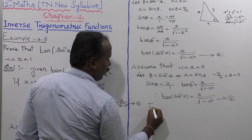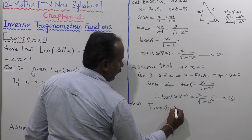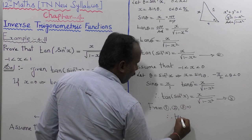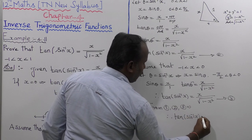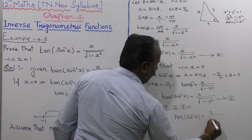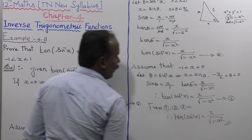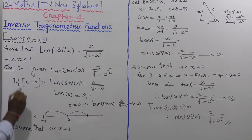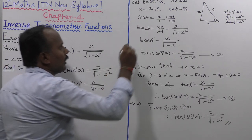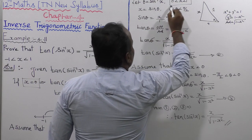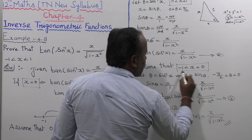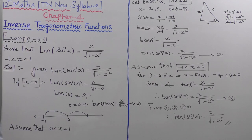From equations 1, 2, and 3 we have proved that tan(sin⁻¹x) equals x divided by root of 1 minus x squared. The three intervals considered are: x equal to 0, 0 less than x less than 1, and minus 1 less than x less than 0. That is the proof. Thank you.